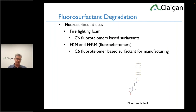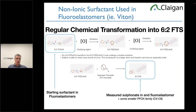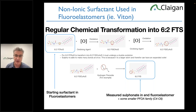The same surfactant family used in firefighting foam is used to make fluoroelastomers — Viton, FKM, or FFKm perfluoroelastomers. These contain C6 fluorotelomers. Most surfactants are complicated chemicals, but thousands of them in that family degrade into 6:2-FTS, which is probably the most important PFAS to know after PFOA. 6:2-FTS is a water-soluble salt found in fluoroelastomer seals and firefighting foam — because there's an enormous family of surfactants that all degrade down to it.